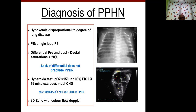Absence of differential saturations does not exclude PPHN — you still need to diagnose by echocardiography. The hyperoxic test was used previously, but with easier bedside echocardiography availability, most neonatologists now use echo. In centers without echocardiography, do an arterial blood gas preferably from the right radial — if PaO2 is more than 150, congenital heart disease is mostly excluded, but echo remains the gold standard.